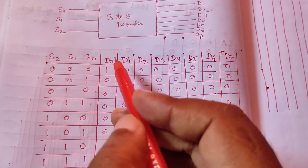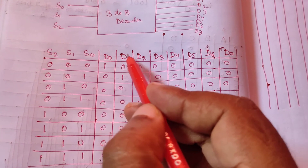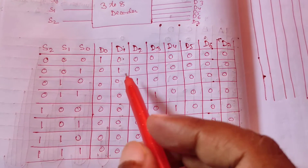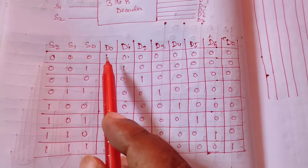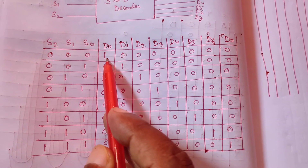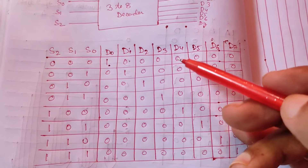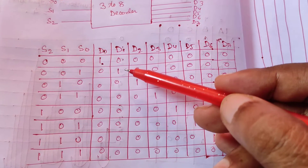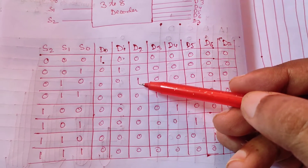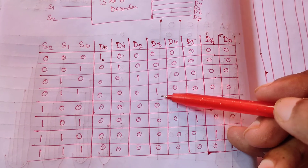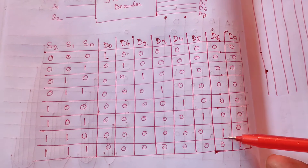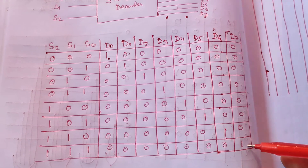We write the output columns D0, D1, D2 up to D7. You can see that diagonally, when it is D0 we place a 1, for D1 we place a 1 here, D2 here, D3 here, D4, D5, D6, and D7 — one 1 per row diagonally.